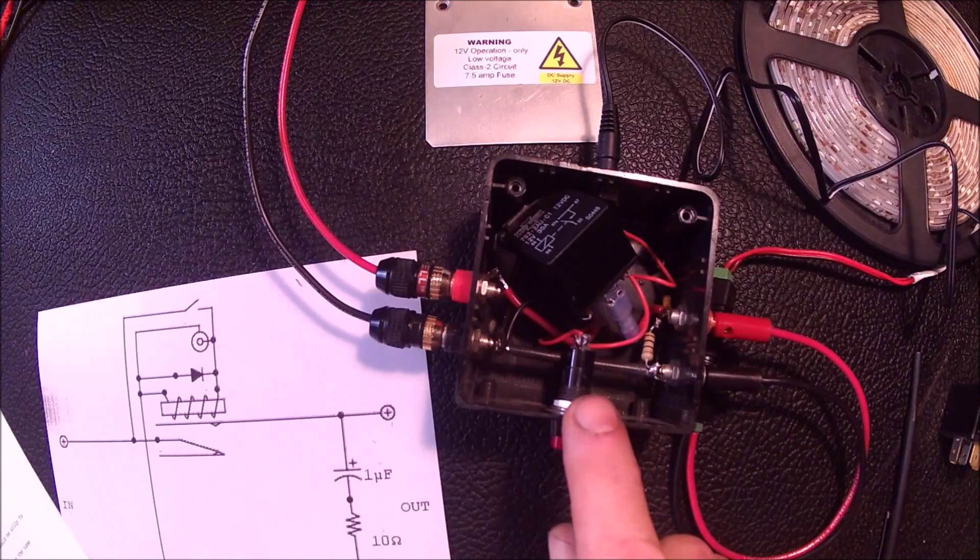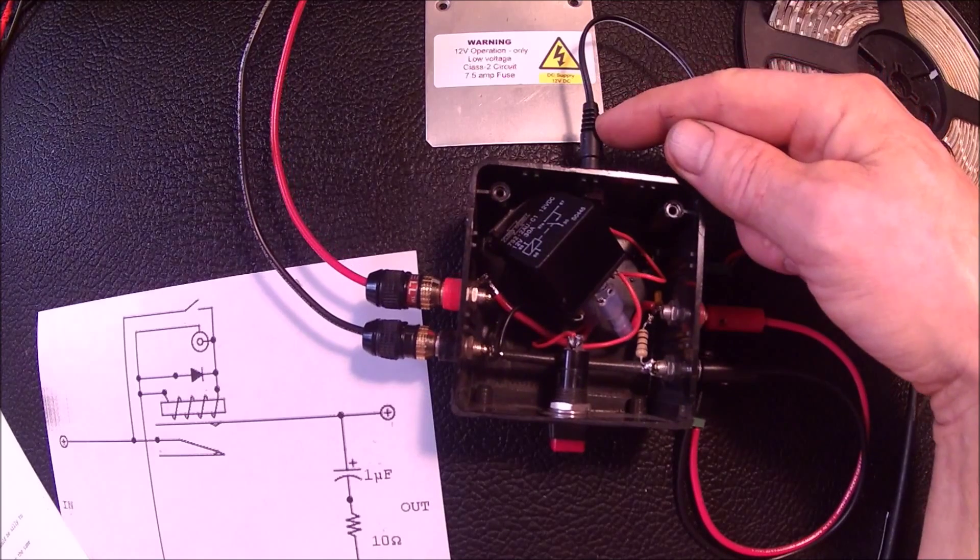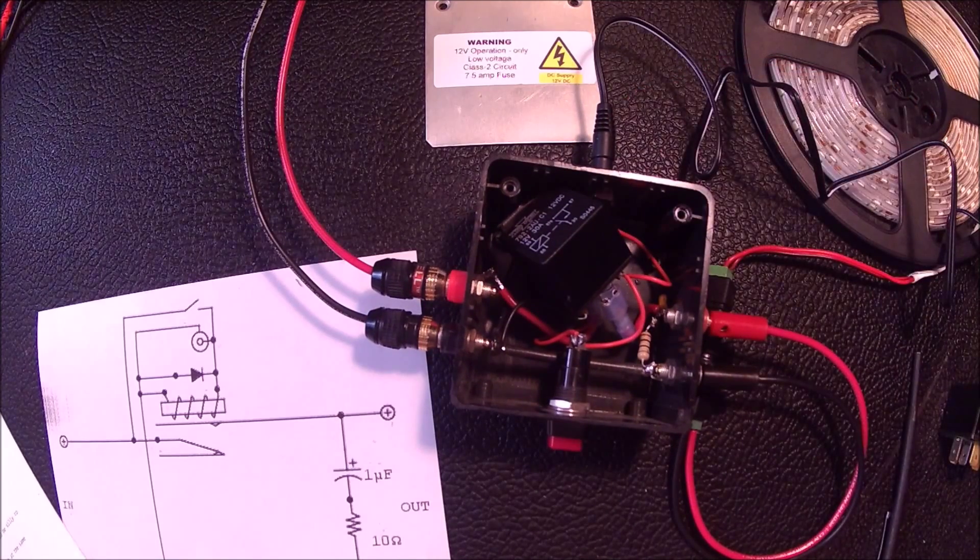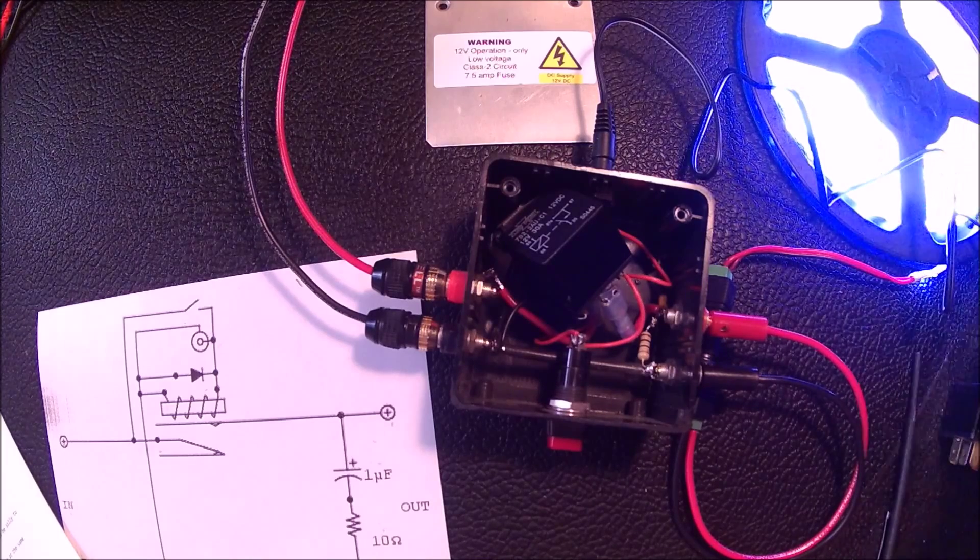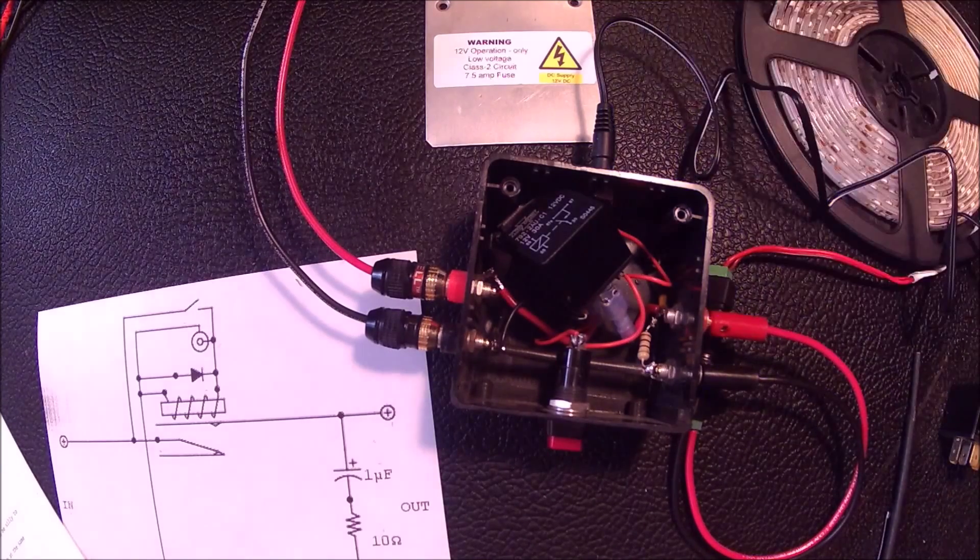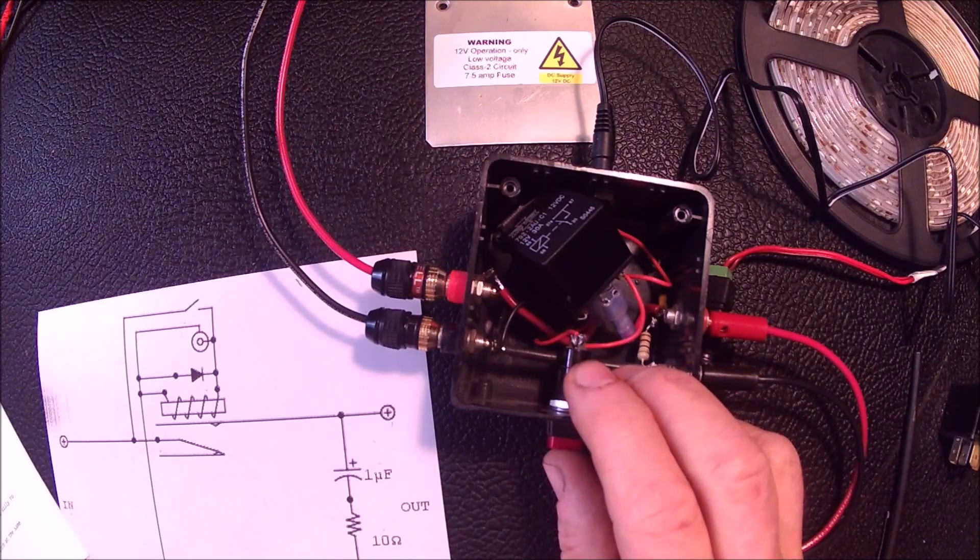So there are two ways to operate the relay. One is via this remote input. So if power is applied the relay turns on and sends power to the LEDs. And if I turn off the power the relay is turned off.